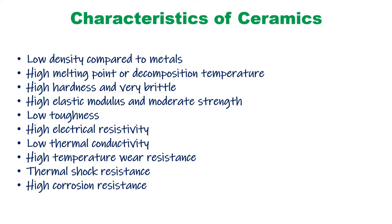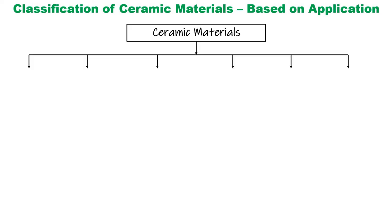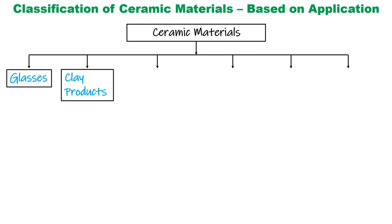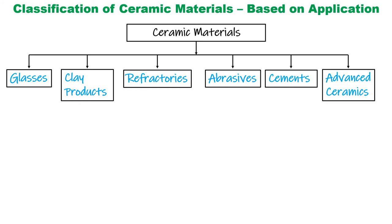Any material which has all these properties can be classified or defined as ceramics. These ceramic materials are classified into six categories based on their applications: glasses, clay products, refractories, abrasives, cements, and advanced ceramics.